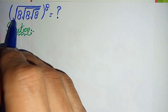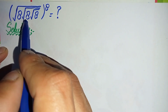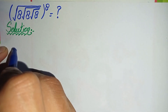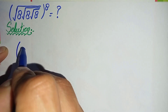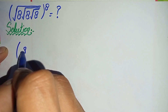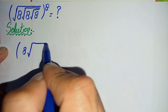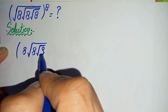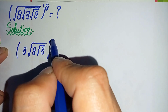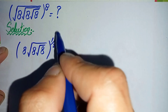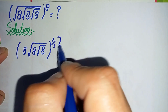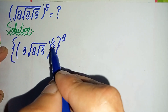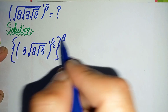First of all, I will change this square root over the whole number to its equivalent value one over two, or half. So this equation will become 8 times square root of 8 times square root of 8. The first square root will be changed to its equivalent value, that is one over two or half, held as two raised to power 8.